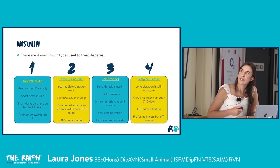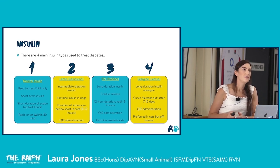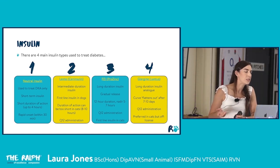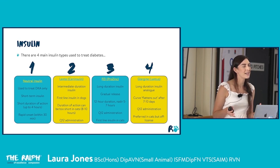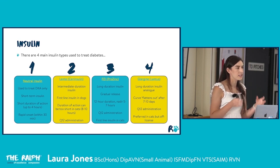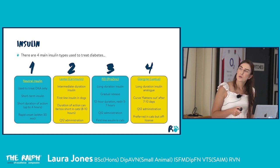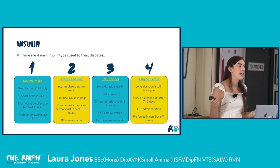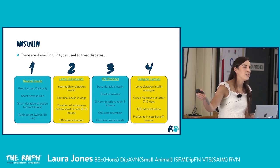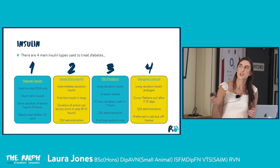There are four main types of insulin used to manage diabetic patients depending on species and presentation. Neutral insulin is only used for DKA cases because it's very short-acting — rapid onset within half an hour and lasting up to four hours. It's great for DKA but would require injections every four hours for long-term use, which is impractical.